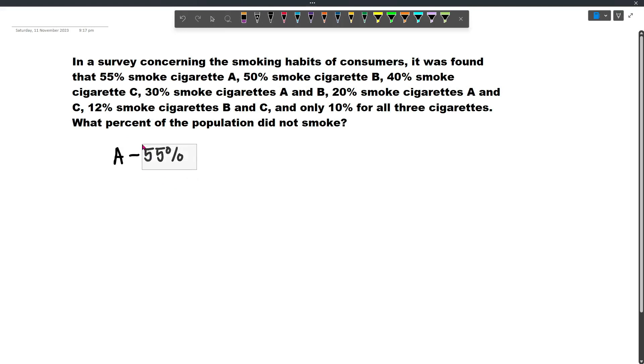And so let's write that here. 55% of the population smokes cigarette A. And then 50% smoke cigarette B, and then 40% smoke cigarette C.